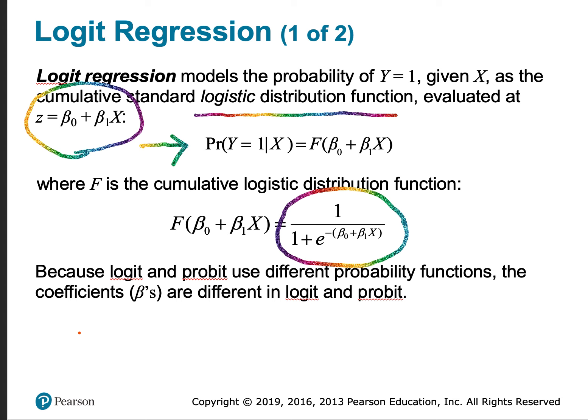Because the logit and probit regressions use different probability functions, the coefficients, or the betas, are going to be different for logit and probit.